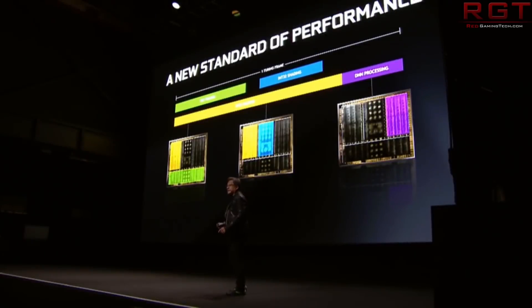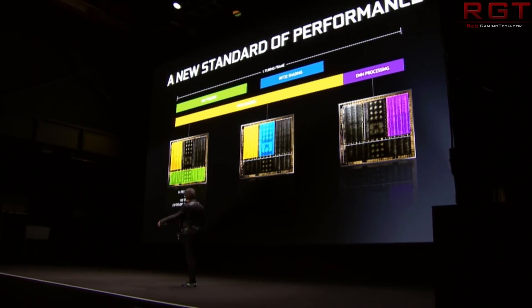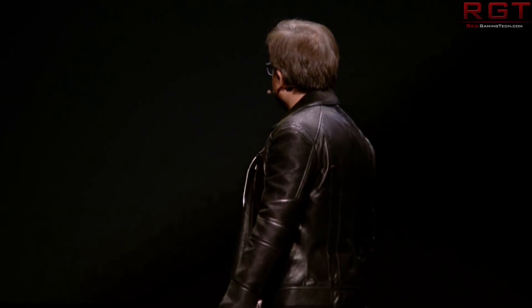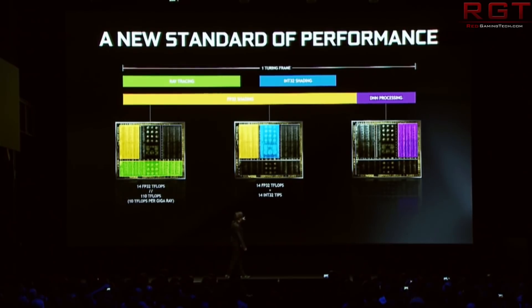NVIDIA provides reference numbers with graphs not so you can copy them as a reviewer — that would be unethical — but so you can verify your system. If they're getting 62 FPS at 4K and you're getting 75, you may have chosen the wrong graphical preset. If you're getting 41, there might be a driver or configuration issue. It's a rough indication of whether your system is performing as expected.